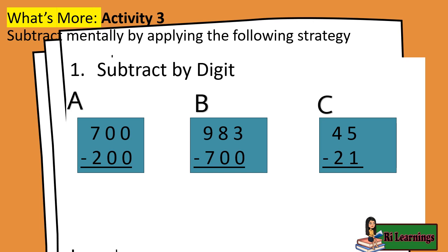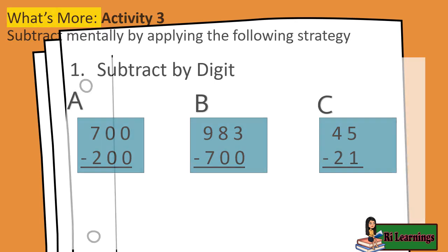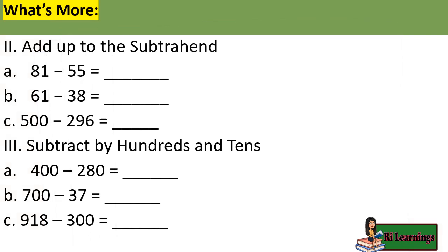What's More? Activity 3: Subtract mentally by applying the following strategies. Subtract by digit: a. 700 minus 200, b. 983 minus 700, c. 45 minus 21. Add up to the subtrahend: a. 81 minus 55, b. 61 minus 38, c. 500 minus 296. Subtract by hundreds and tens: a. 400 minus 280, b. 700 minus 37, c. 918 minus 300.